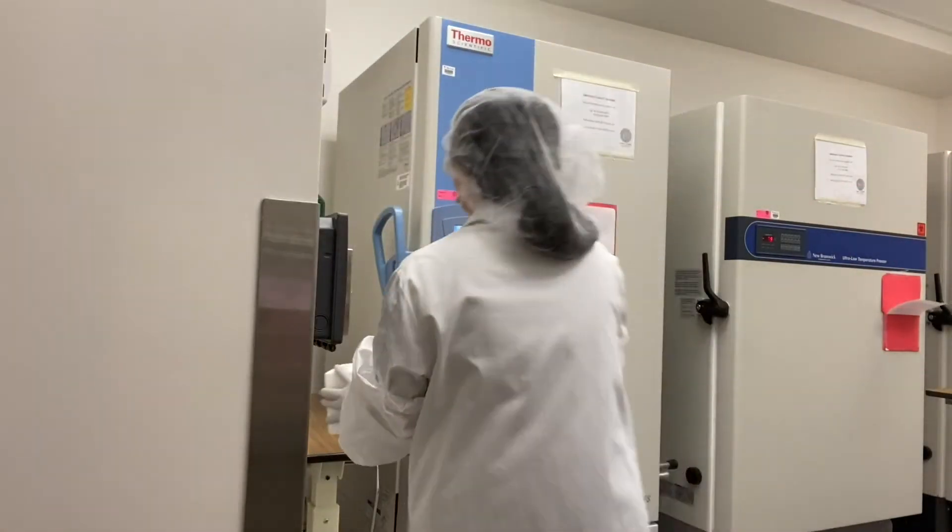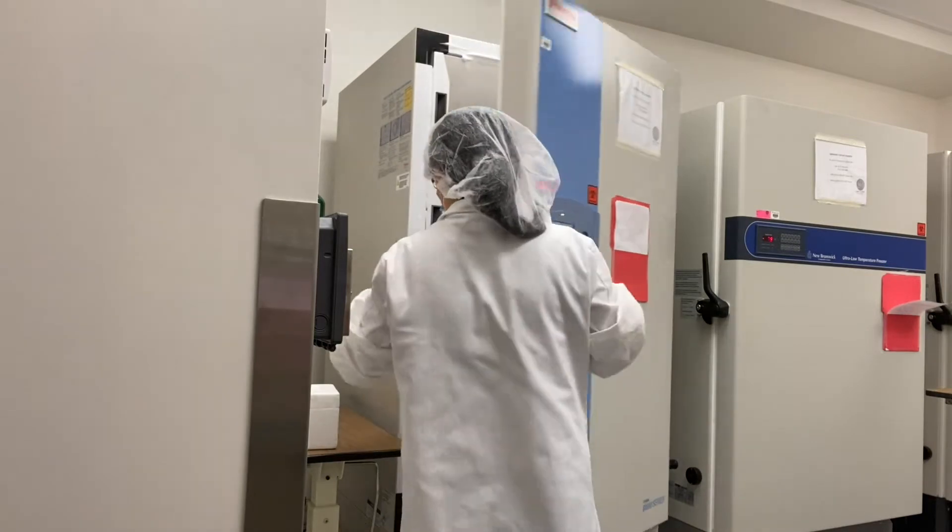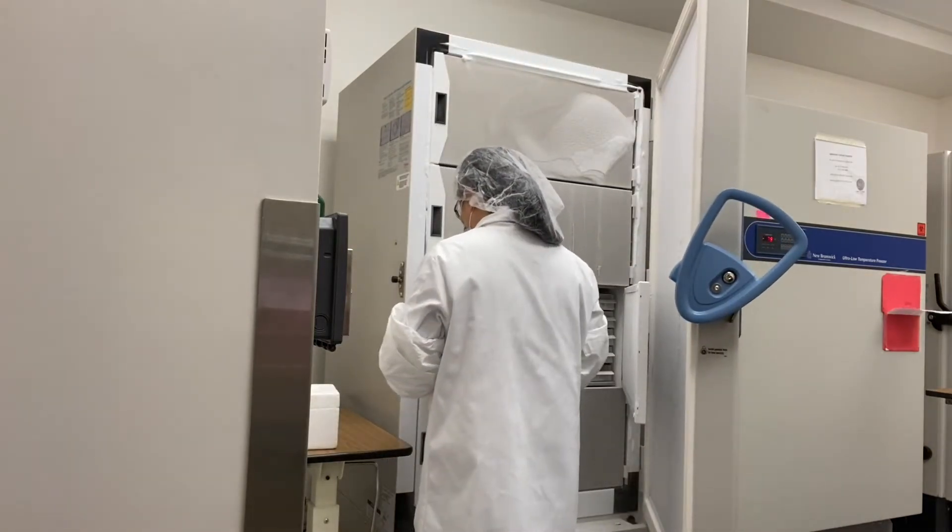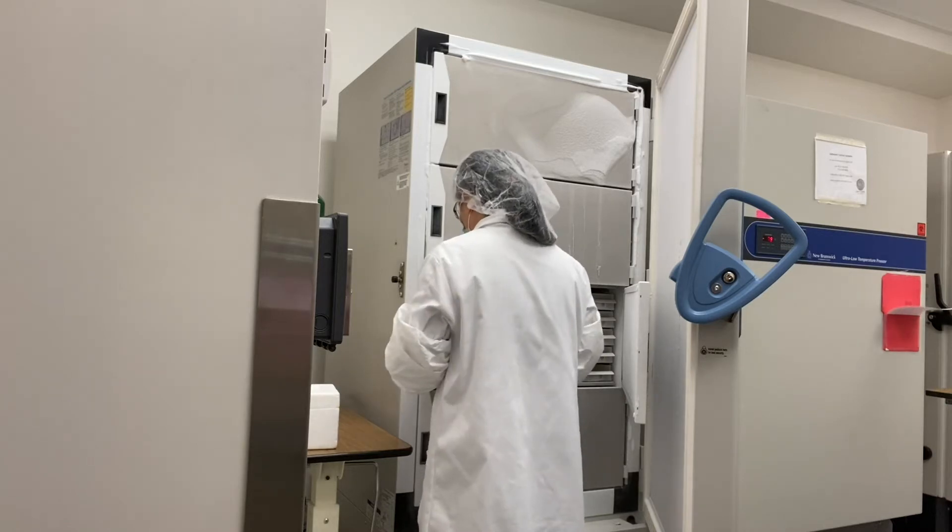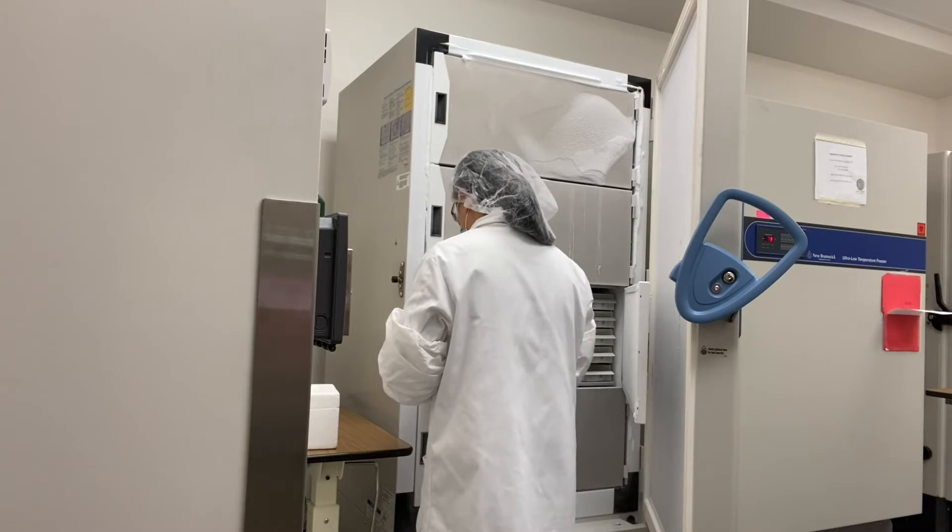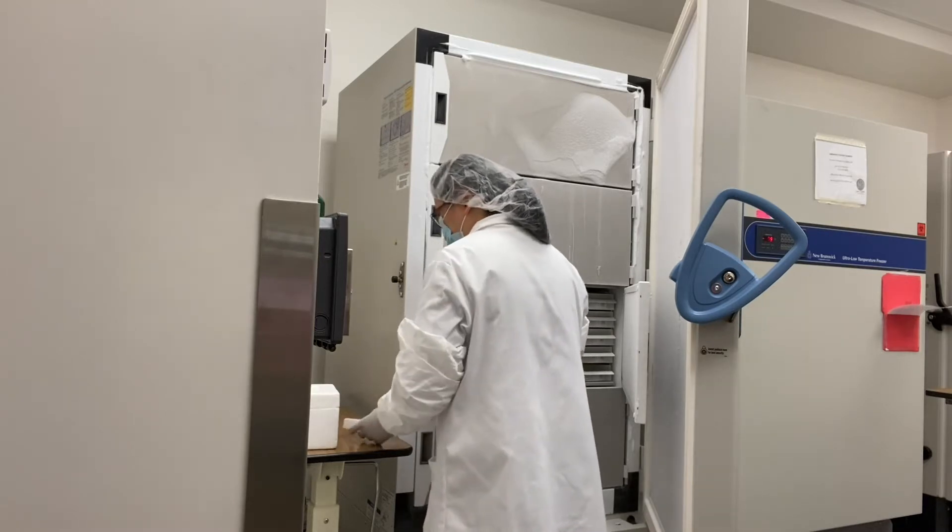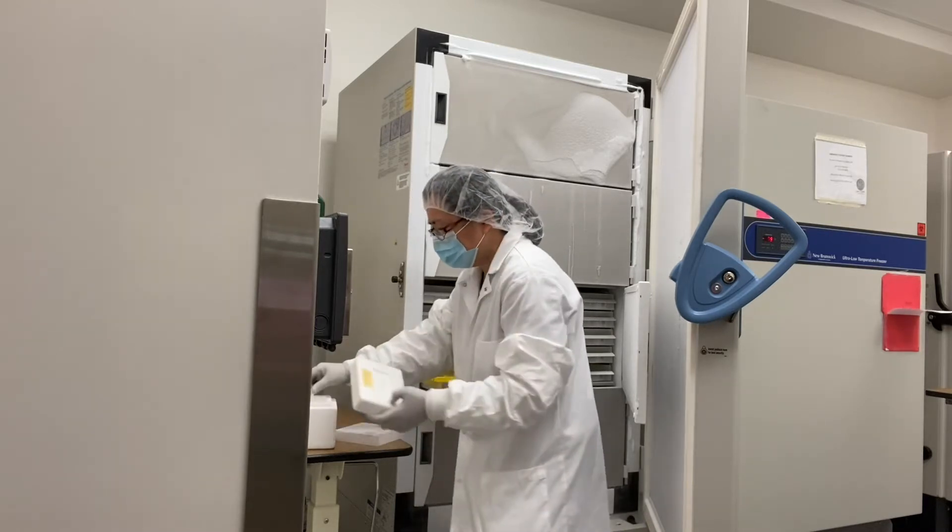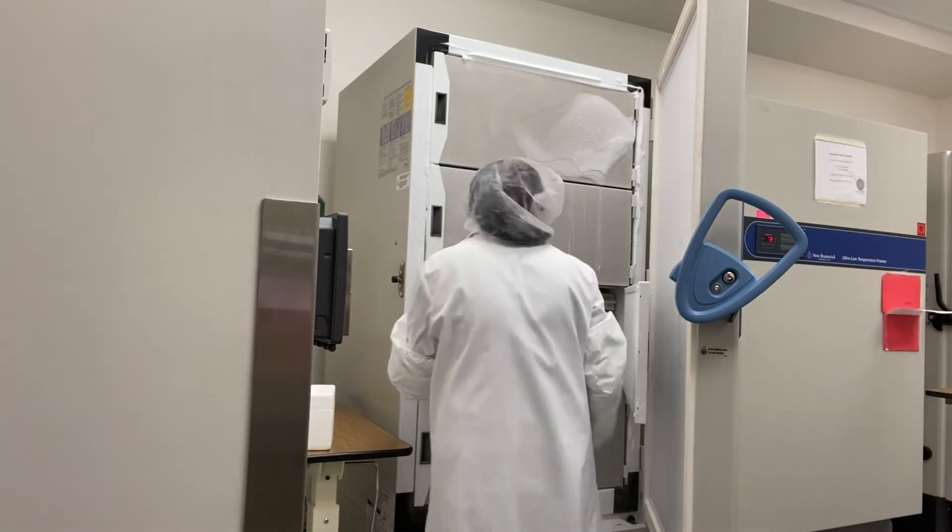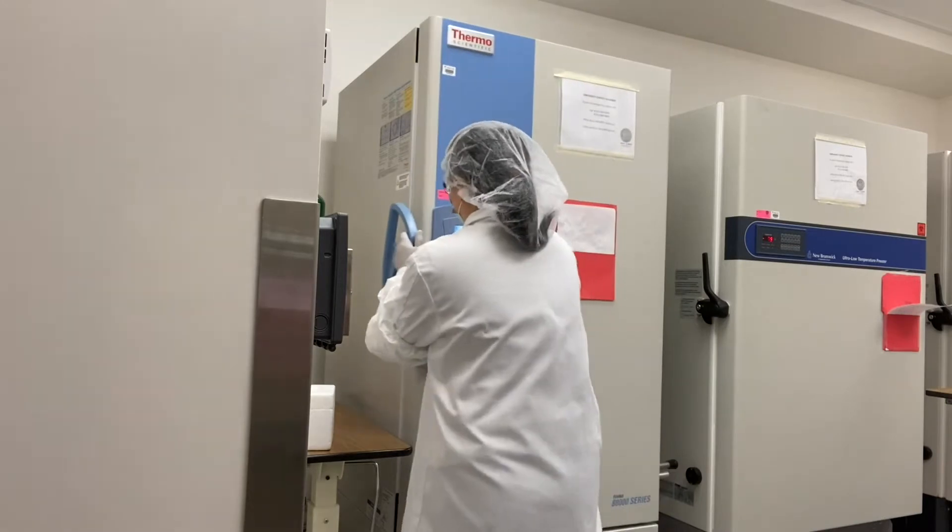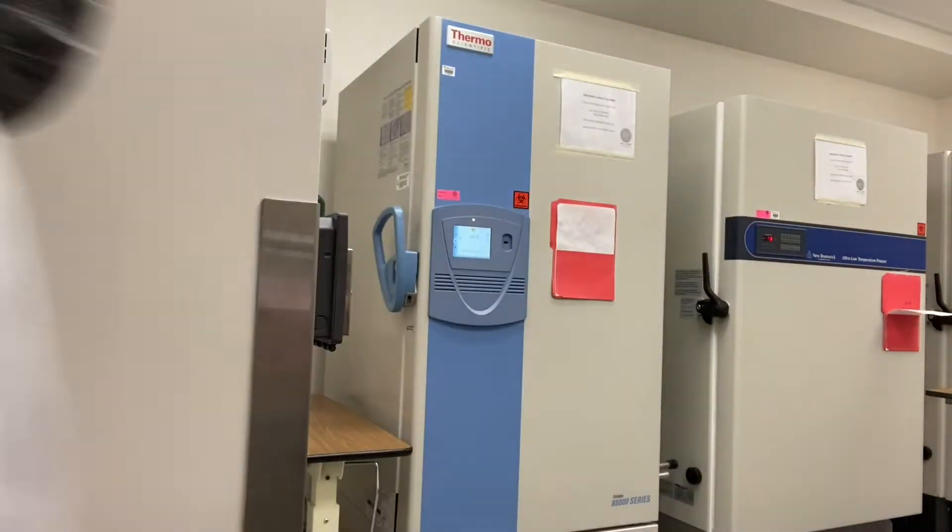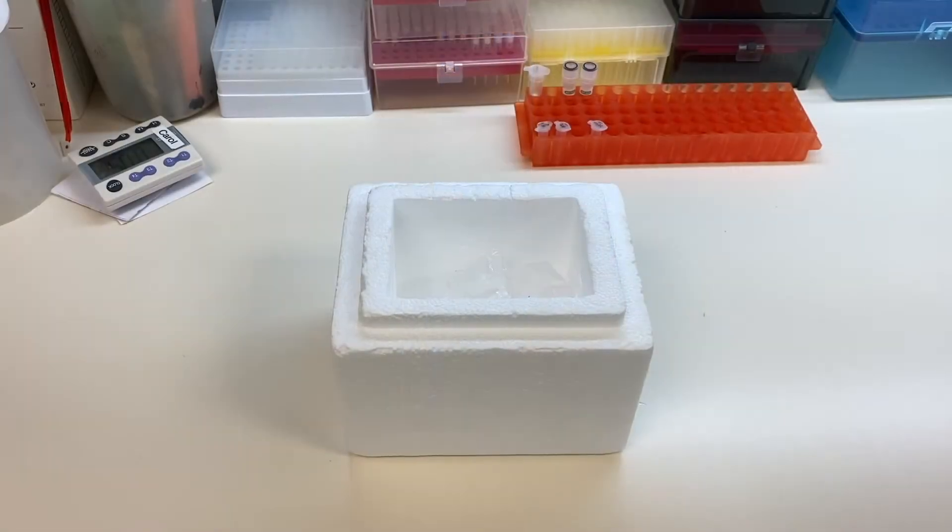Take an aliquot of matrigel from the minus 80 degrees Celsius freezer and place it immediately on ice. When preparing the aliquots of matrigel, take into consideration the dilution factor provided by the manufacturer to calculate the volume of the aliquot. The dilution factor changes depending on the lot. Each aliquot should have enough volume to allow for a 1 in 100 dilution in DMEM.